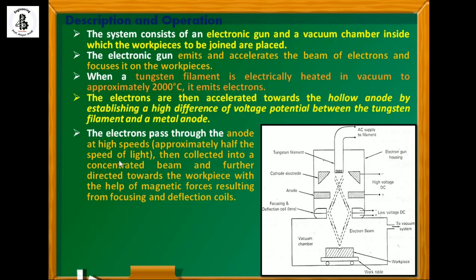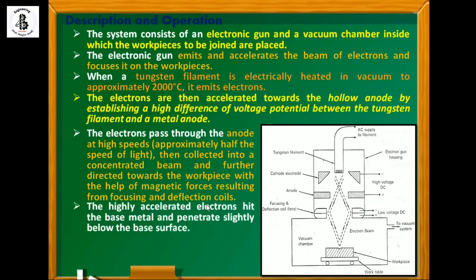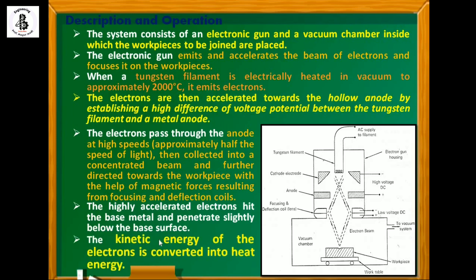The emitted electrons have high kinetic energy, and when this kinetic energy strikes any material it converts into heat energy. The electrons pass through the anode at high speed — approximately half the speed of light — then are collected into a concentrated beam and directed toward the workpiece with the help of magnetic forces from the focusing and deflection coils. The highly accelerated electrons hit the base metal and penetrate slightly below the base surface, and the kinetic energy is converted into heat energy. This is the basic principle of the electron beam welding process.